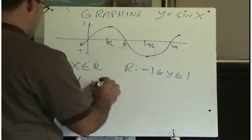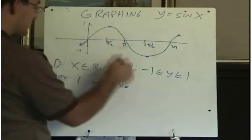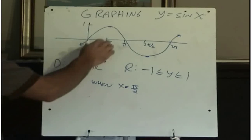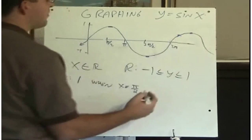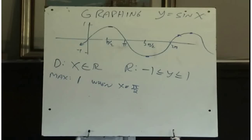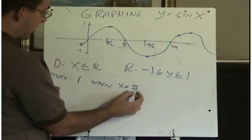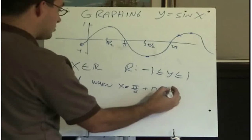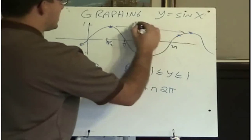The maximum value is 1 — this graph doesn't get any higher than 1. So the maximum is 1 when x equals pi over 2. We can see when x is pi over 2, we have a maximum value of 1. But this isn't the only place — remember, we said this carries on forever. So there'll be another maximum of 1 here, and another way over there, and another off this side as well.